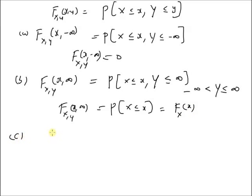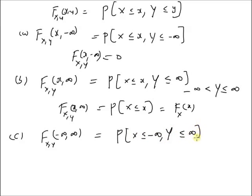Next, we look at the CDF at minus infinity comma plus infinity. This is the probability that X is less than or equal to minus infinity and Y is less than or equal to plus infinity. In this case, X cannot take any value on the real line, so this is basically an empty set, and the probability of an empty set is zero. Therefore, F(x,y) of minus infinity comma plus infinity is zero.